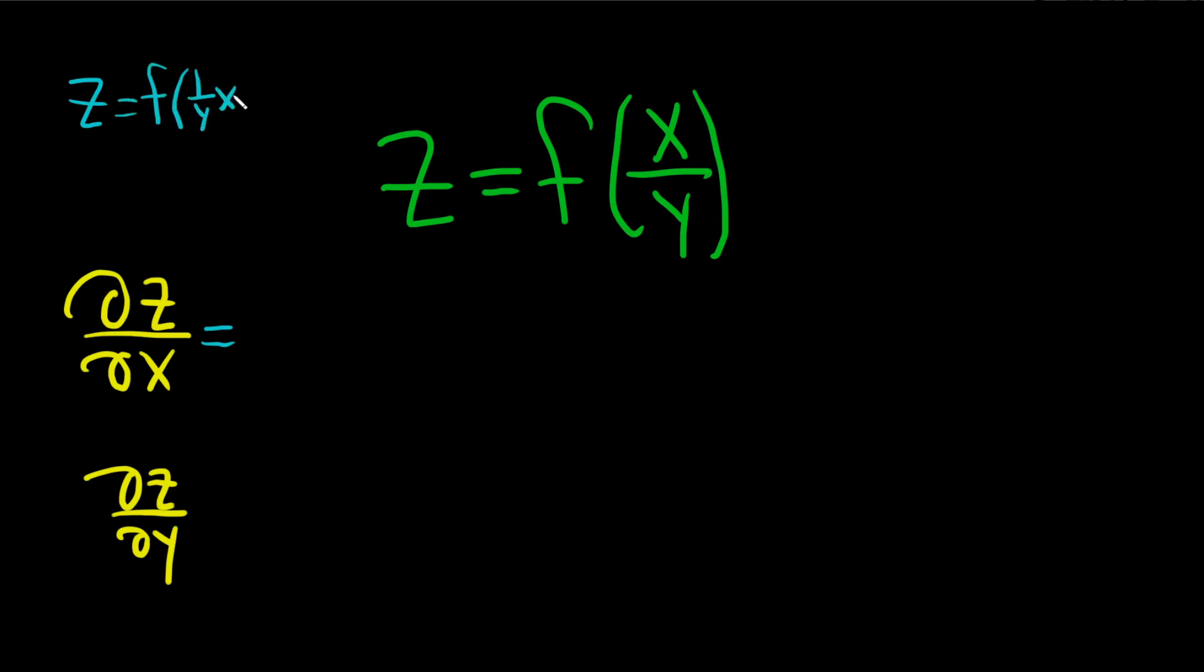And the reason is when we use the chain rule, we're going to have to take the derivative of the outside and then multiply by the derivative of the inside. And so the point is whenever you're differentiating with respect to x, all of the y's are constants. So this piece here is going to be a number, so it's going to hang out.